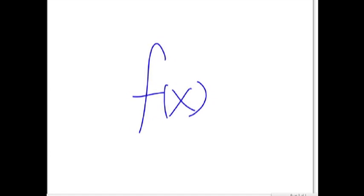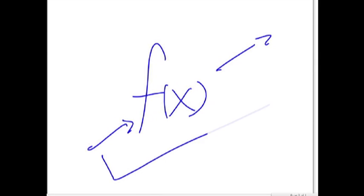Bijection, injection, and surjection distinguish functions based on how their inputs, or the domain, and images, or the codomain, are related. So, inputs and outputs — bijection, injection, and surjection relate those two.